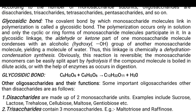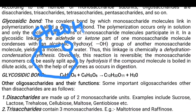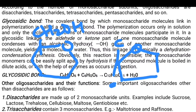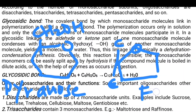Polymerization occurs only in solution and only the cyclic or ring form of the monosaccharide molecules participate in it. In the previous lecture we dealt with some words called pyranose and furanose. So I am drawing a diagram here — one of them is the pyranose and the other one is the furanose.